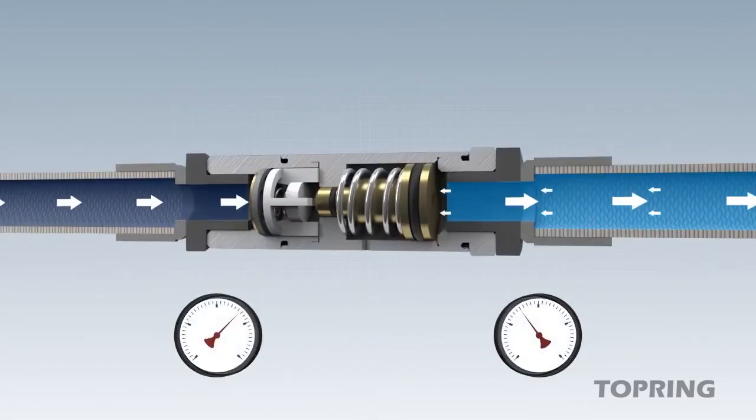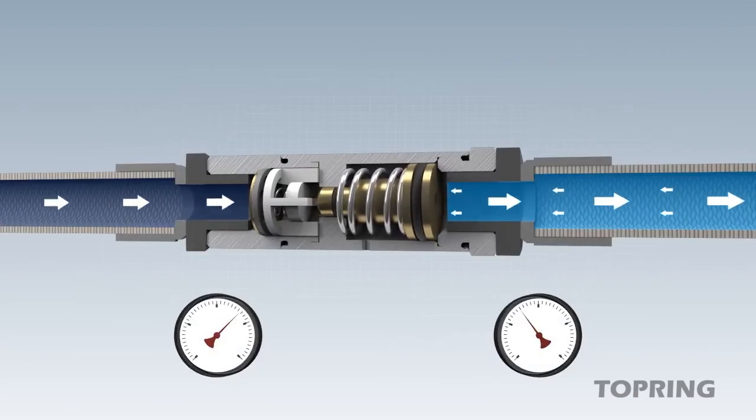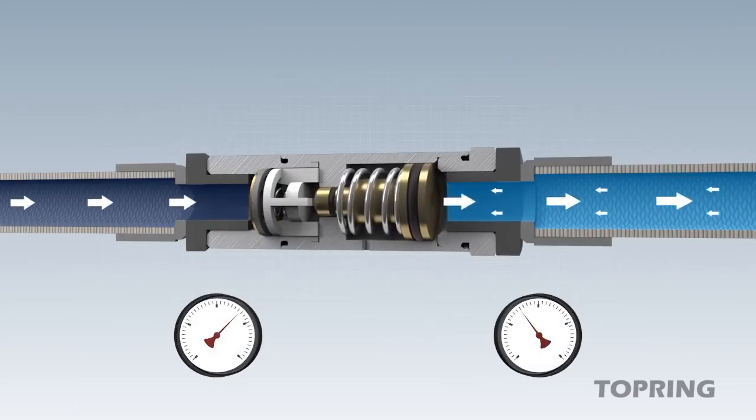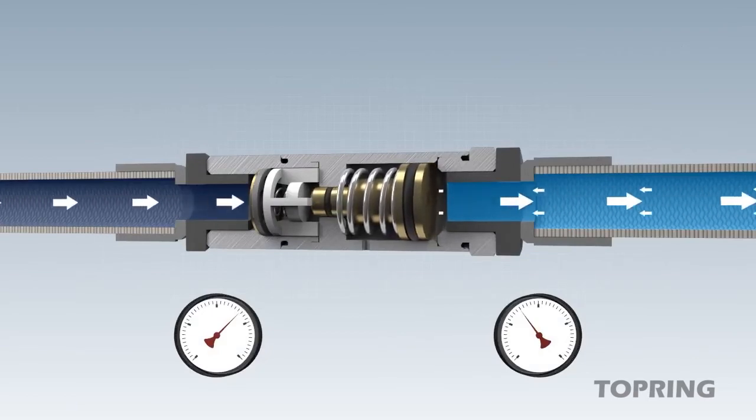When the work continues and thus causes air consumption, the valve seat opens and air flows to the consumer again. The output pressure remains constant at the selected pressure.